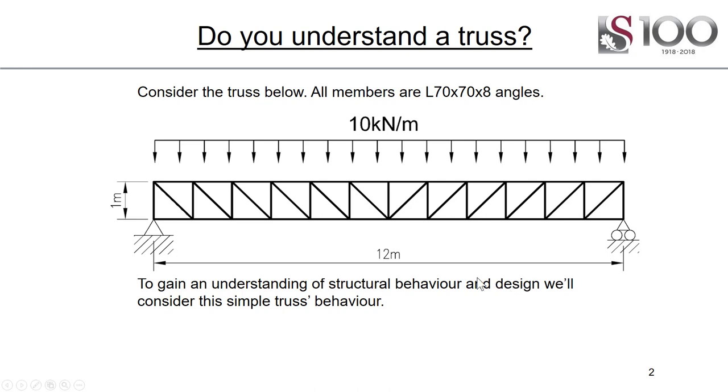Let's start off with a simple truss. Here we've got a 12 meter spanning truss with a 10 kilonewton per meter uniformly distributed load on it. Let's assume all angles are 70x78 equal leg angles.